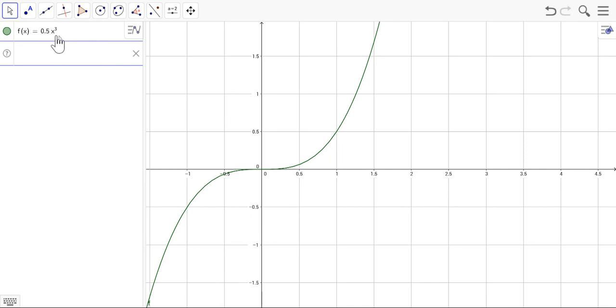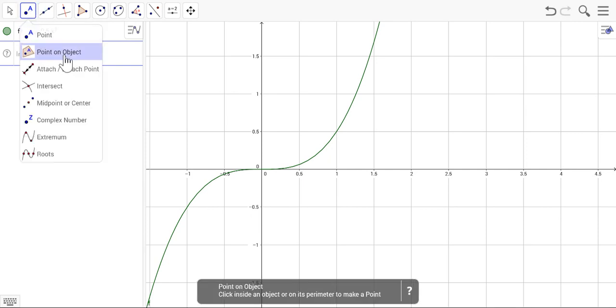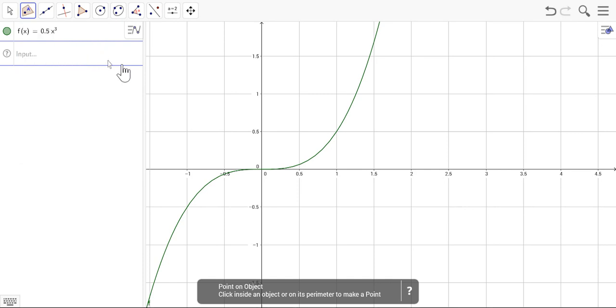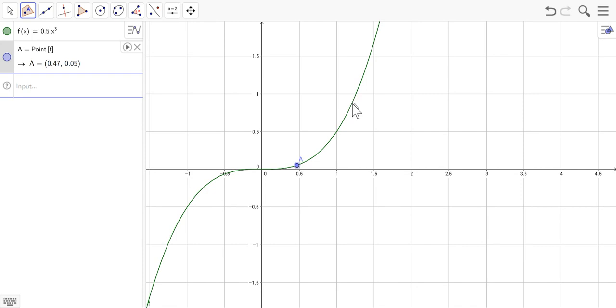I'm just going to go up to the point tool, click on point on object, go over here and put down some points. All right, points A and B.